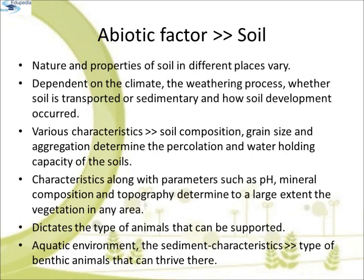The last abiotic factor is soil. The nature and properties of soil in different places vary, depending on climate, the weathering processes, whether the soil is transported or sedimentary, and how soil development occurred. Various characteristics such as soil composition, grain size and aggregation determine the percolation and water-holding capacity of the soil. These characteristics, along with parameters such as pH, mineral composition and topography, determine to a large extent what vegetation exists in an area, which in turn dictates the type of animals that can be supported. Similarly, in the aquatic environment, sediment characteristics often determine the type of benthic animals that can thrive there.